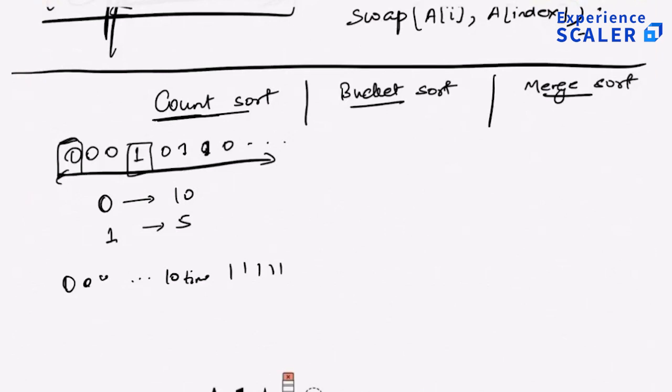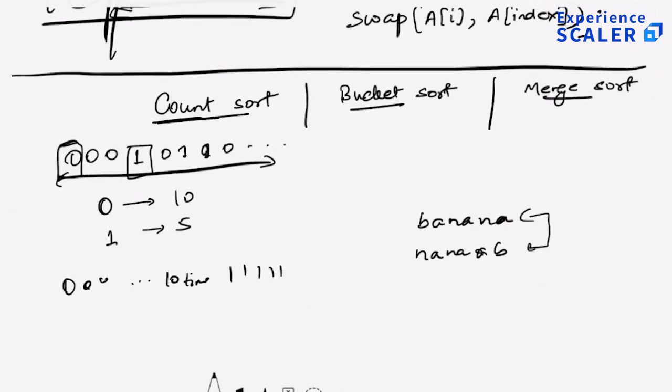So one very common application of this is if I give you two strings and I ask you, are these strings anagrams of each other? Anagrams is like two strings are anagrams if they are just some or the other permutation of the same string. For example, if I give you a string banana and I give you another string, let's say this is not really a word, but I give you these two strings, right? And I ask you, are these anagrams of each other?